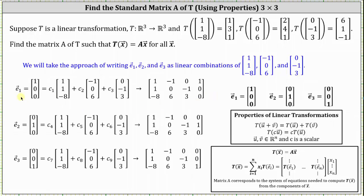Here I've set this up where we have the vector (1, 0, 0) as a linear combination of the three vectors. And then we have the vector (0, 1, 0) as a linear combination of the same three vectors. And then finally the vector (0, 0, 1) as a linear combination of the three vectors. Again, we're using these three vectors because we know the transformations of these three vectors.